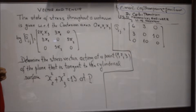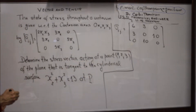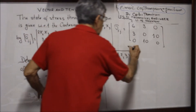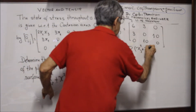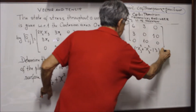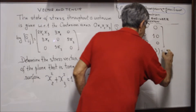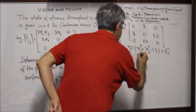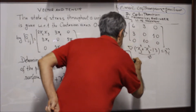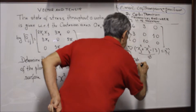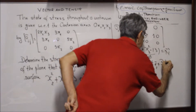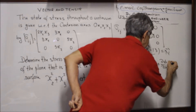Now let's calculate the normal to the plane — the plane that is tangent to the cylindrical surface. The gradient of the surface function phi = X2² + X3² − 13 gives the normal vector. So the gradient is: (∂phi/∂X1)·E1 + (∂phi/∂X2)·E2 + (∂phi/∂X3)·E3.